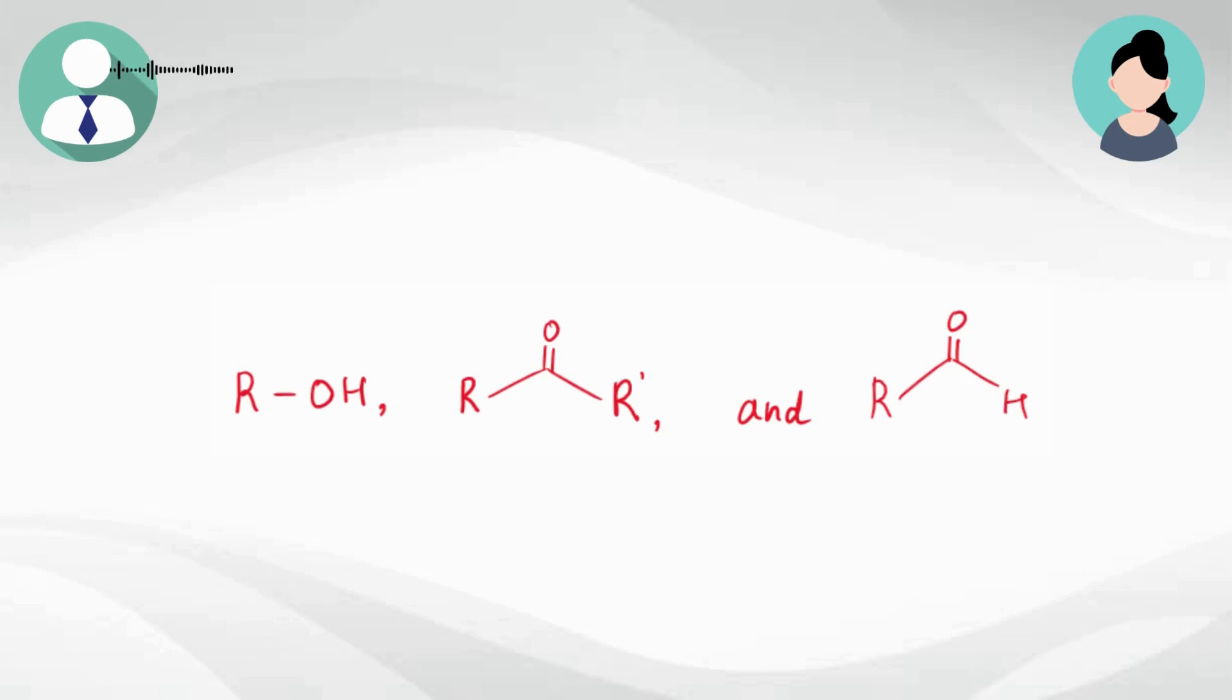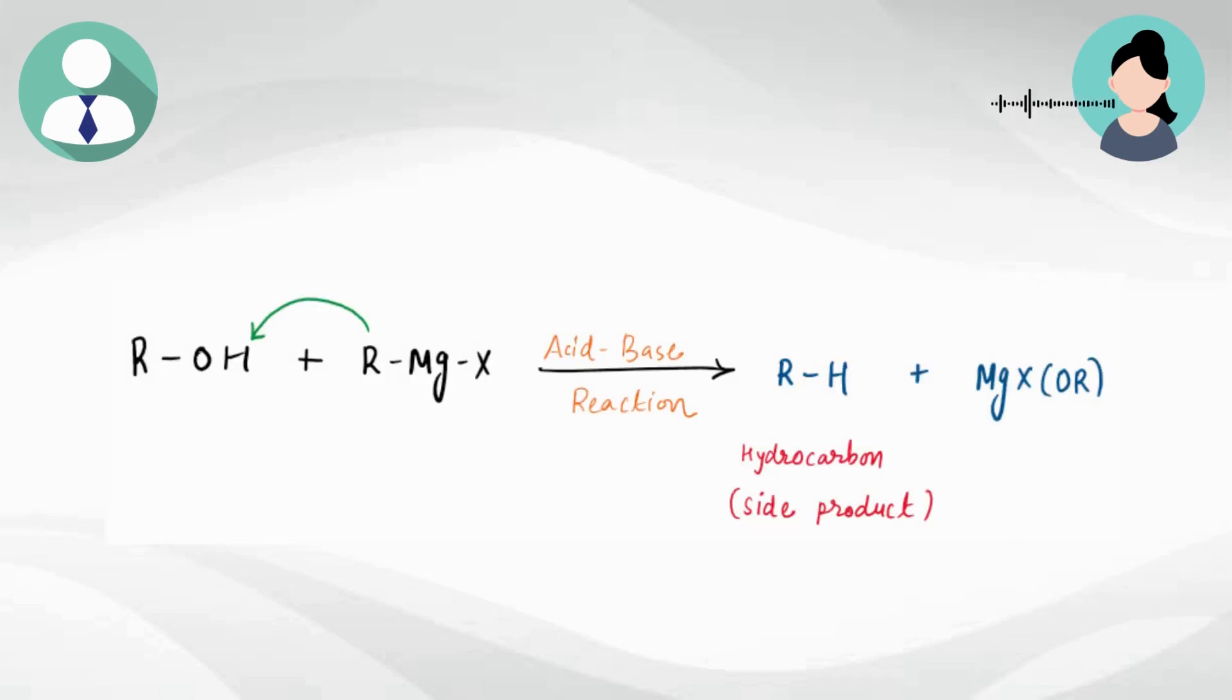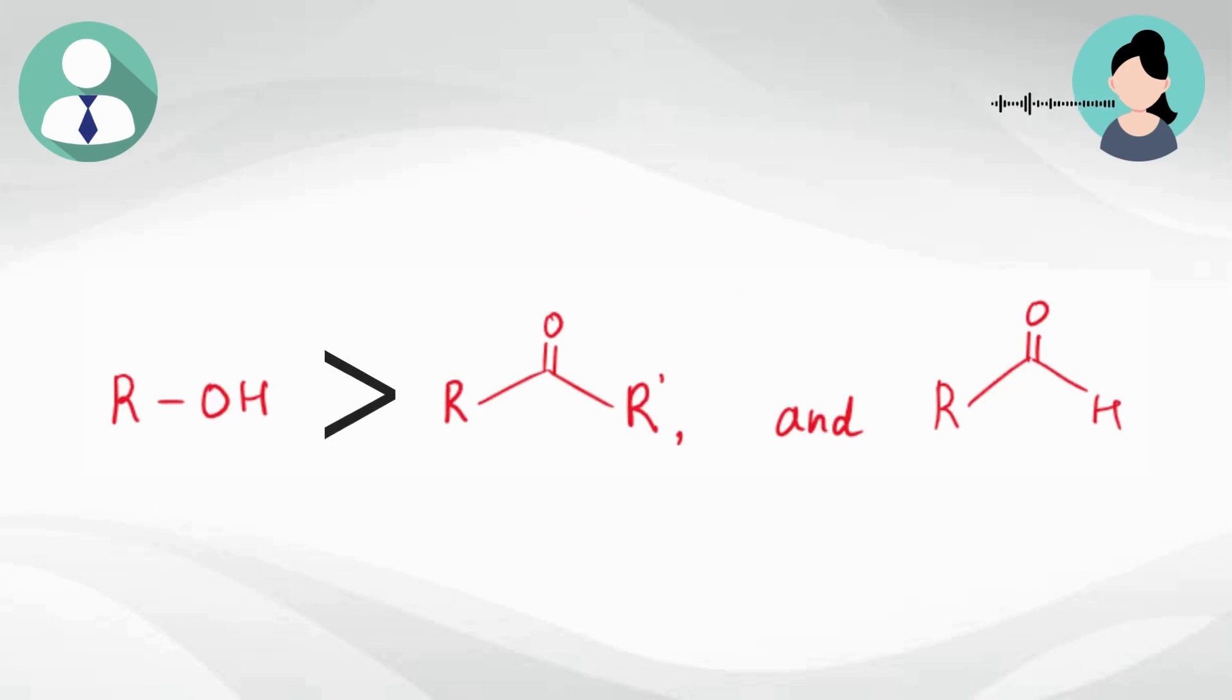Then he said, I'm giving you these three compounds and tell me about its reactivity order with Grignard reagent. So he gave me these three compounds: alcohol, ketone and aldehyde. Then I answered that as I said earlier, alcohol shows acid-base reaction with Grignard reagent and generally acid-base reaction is faster compared to other reactions. So alcohol is most reactive out of these three compounds.